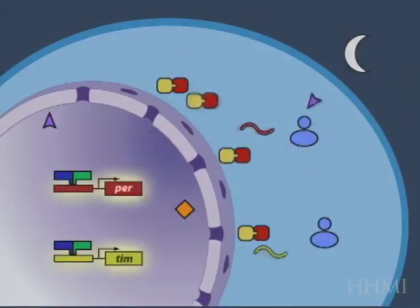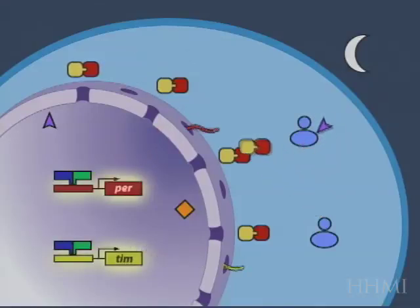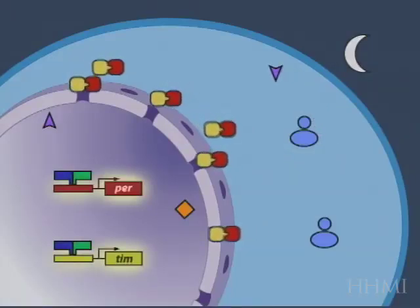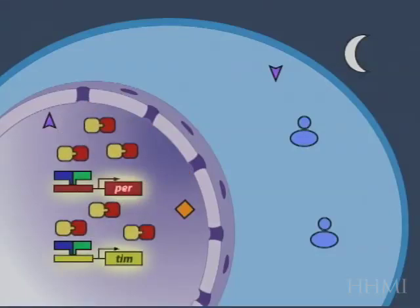And if the period protein which is produced gets together with its partner timeless and forms a heterodimer, then the heterodimer is resistant to the effects of the double-time kinase. So, that's really the distinction between the protein which is degraded and the protein which is accumulated.